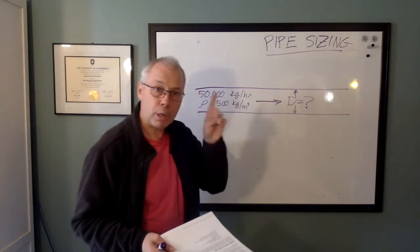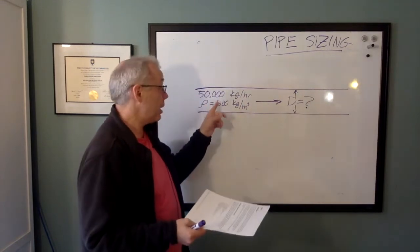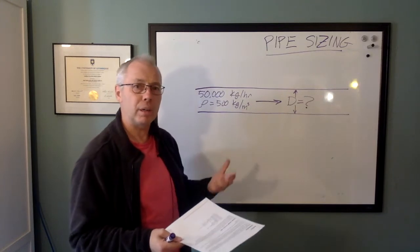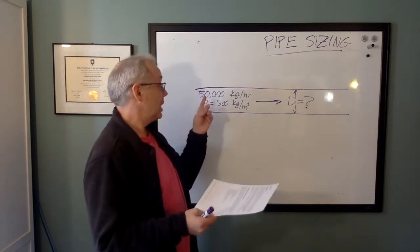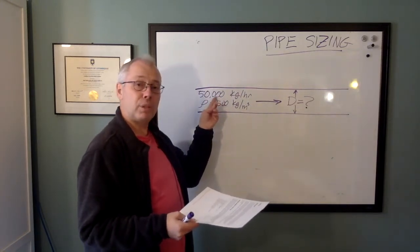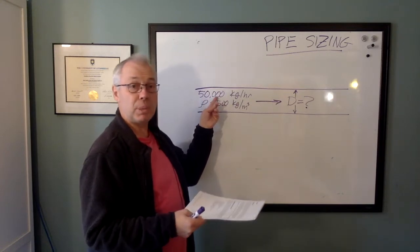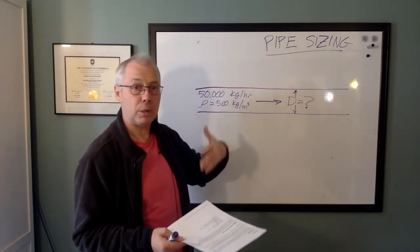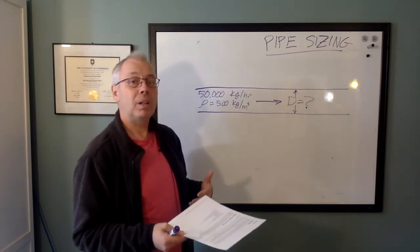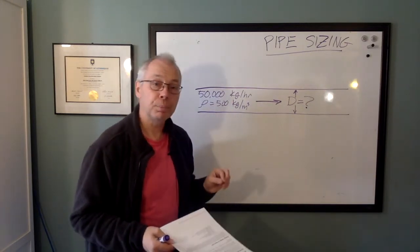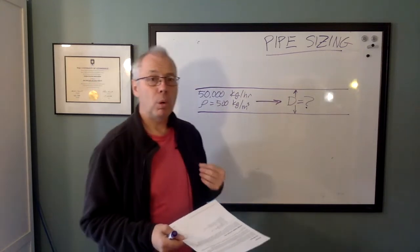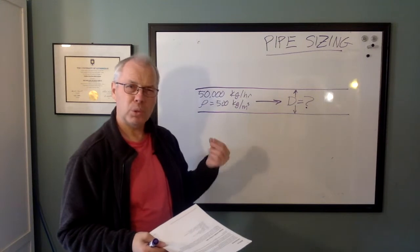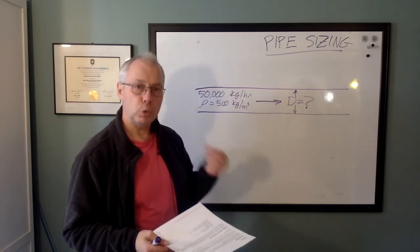Now before we go any further, we have to check that flow rate. Because one of the things that process engineers need to be aware of is the material balance number that we have for a flow rate. So if someone says it's 50,000 kilograms an hour of propane that we need right now, today, for the design, well, that's actually not correct. Because we have to think about what we need maybe in the future, or for control reasons.